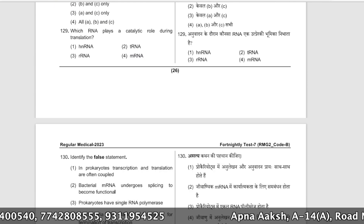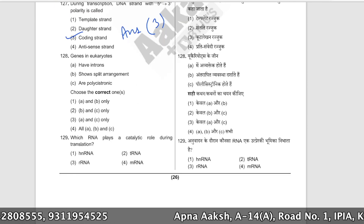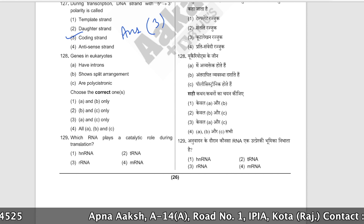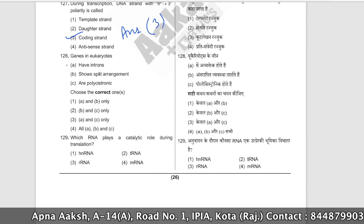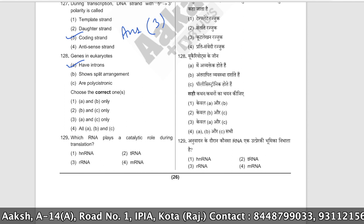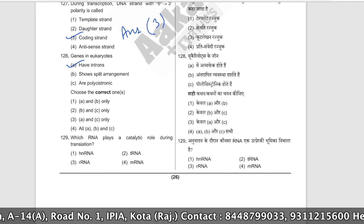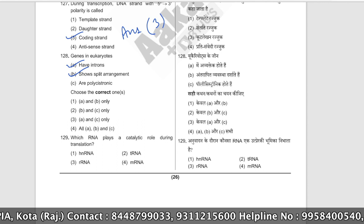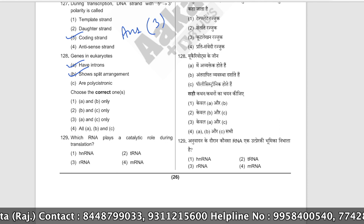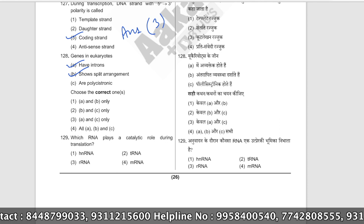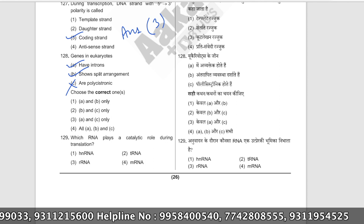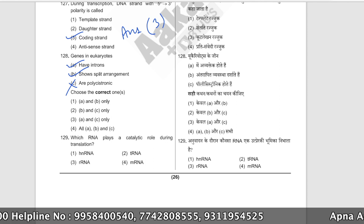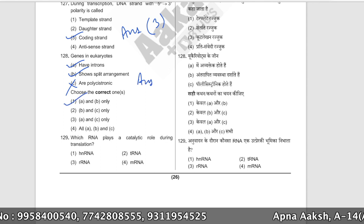Genes in eukaryotes have introns, show split gene arrangement, and are monocistronic. Polycistronic genes are found in prokaryotes, not eukaryotes. So for eukaryotes, only options A (introns) and B (split arrangement) are correct. The answer is option number one.